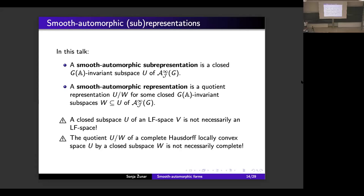Now, there is some light in this story. Namely, we were able to prove that if U is small enough — if we have a smooth automorphic sub-representation U that is finitely generated as a representation of G(A), or more generally if we have a smooth automorphic sub-representation U which is annihilated by a power of J — then it is an LF space, and every quotient of U by some closed G(A)-invariant subspace is also an LF space. But for general smooth automorphic sub-representations U, these are open questions.